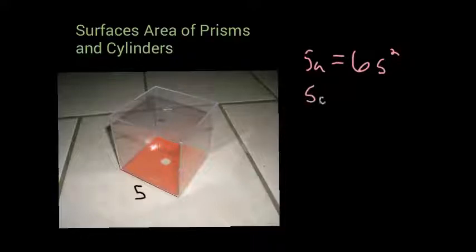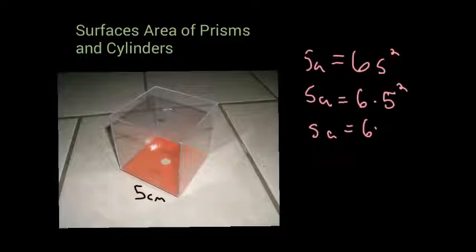So in this case, my surface area, let's give that units, let's say it's 5 centimeters, so my surface area would equal 6 times 5 squared. So my surface area would equal 5 squared is 25, so I'd have 6 times 25. So my surface area would equal 150 centimeters squared.